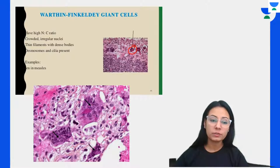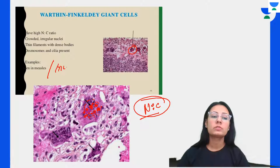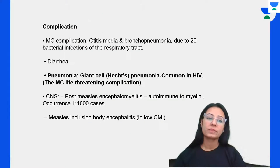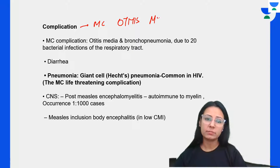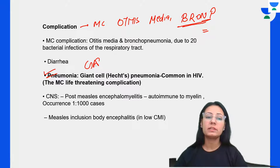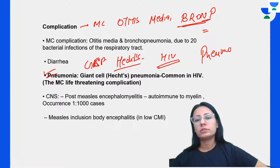Warthin-Finkeldey giant cells are multinucleated cells with irregularly crowded nuclei and a high nuclear-to-cytoplasmic ratio. They are seen in measles but also in HIV cases. Most common complication is otitis media, followed by bronchopneumonia and diarrhea. Giant cell pneumonia (Hecht's pneumonia) is the most common life-threatening complication and is common in HIV patients.